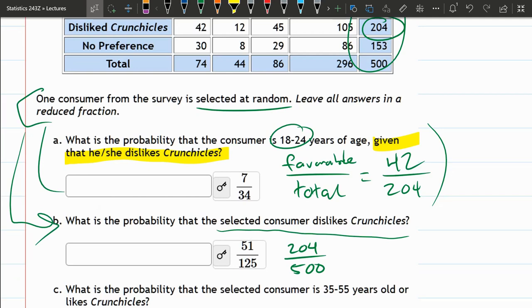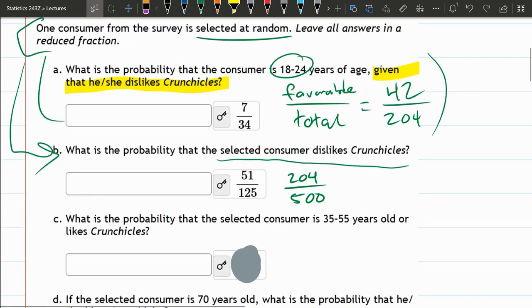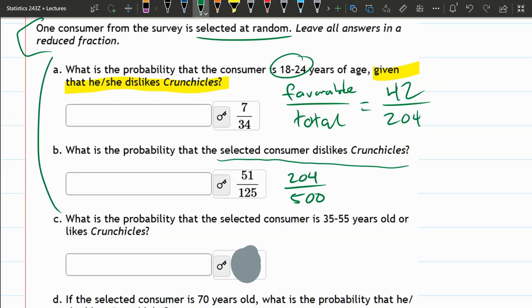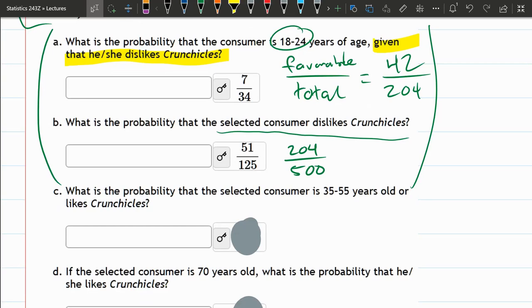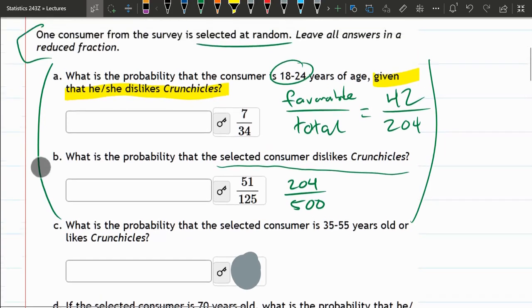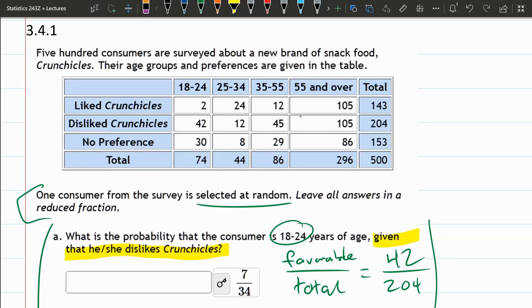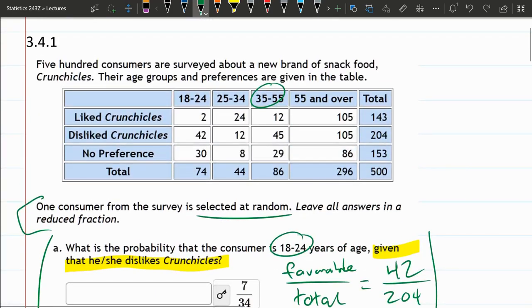We're going to go to part C and D. We'll do C next. Ignore A and B. Just think about one consumer selected at random. What's the probability that the randomly selected consumer is 35 to 55 years old or likes Crunchies? So 35 to 55 or likes Crunchies. So what I'm going to do is highlight everything that's favorable.